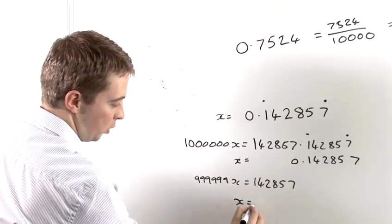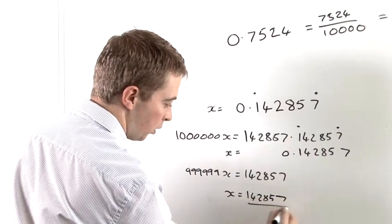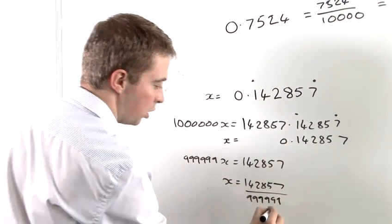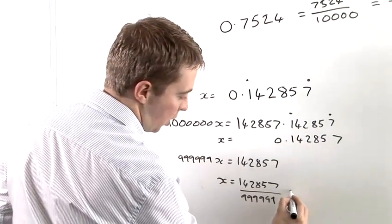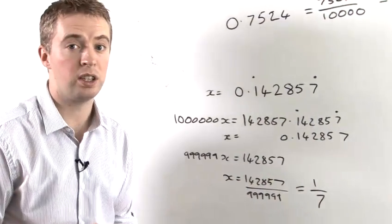And so x is equal to 142857 over 999,999. And if you put that into your calculator and work it out, you will see that that is equal to a seventh.